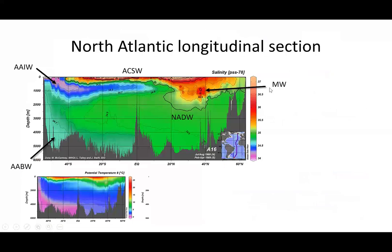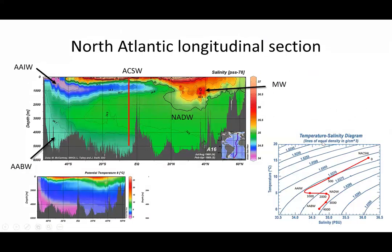Here we have the Mediterranean water and a density diagram. If we plot up the densities of the particular source regions for all these different water masses, we have Antarctic bottom water, North Atlantic deep water, Antarctic intermediate water, and the Atlantic central surface water — very warm surface water. As we go from the bottom of the ocean to the top, the density increases all the way up to the surface at zero meters, and the density variation is really very tiny — only one part in a thousand.